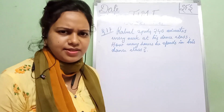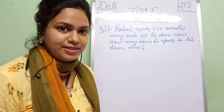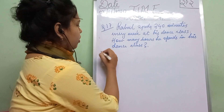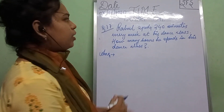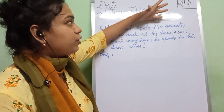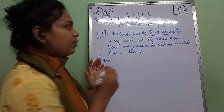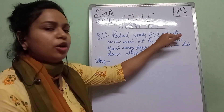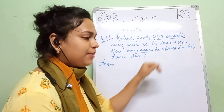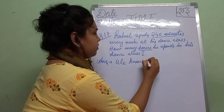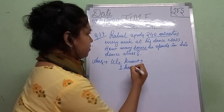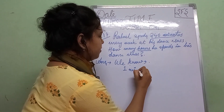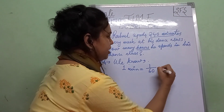It is given that Rahul loves dancing and he spends 240 minutes in his dance class. You have to find out how many hours he spends. You have to convert minutes into hours. We know that minute is a smaller unit of time and hour is a larger unit of time. So 1 minute equals 1 by 60 hours.